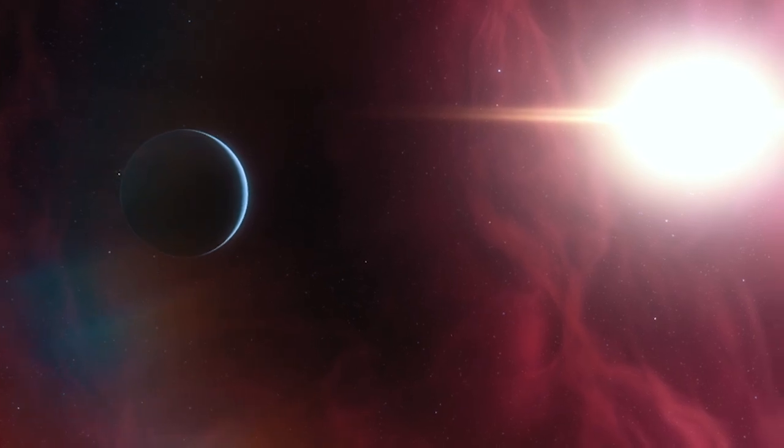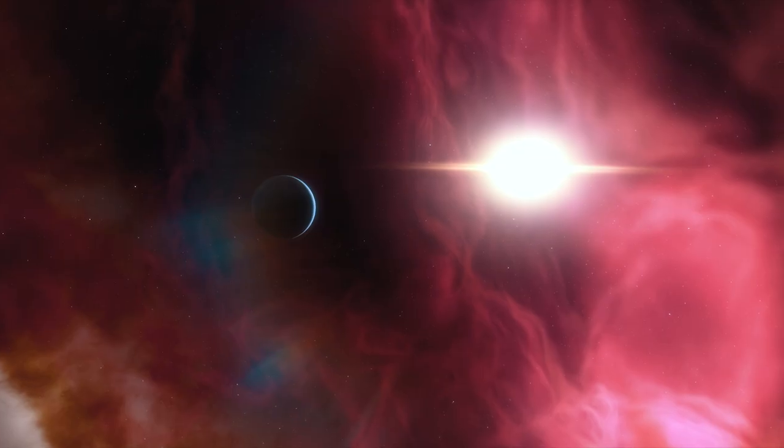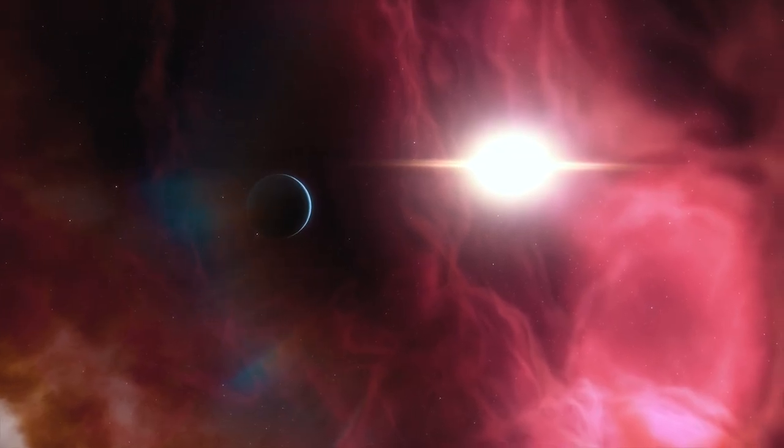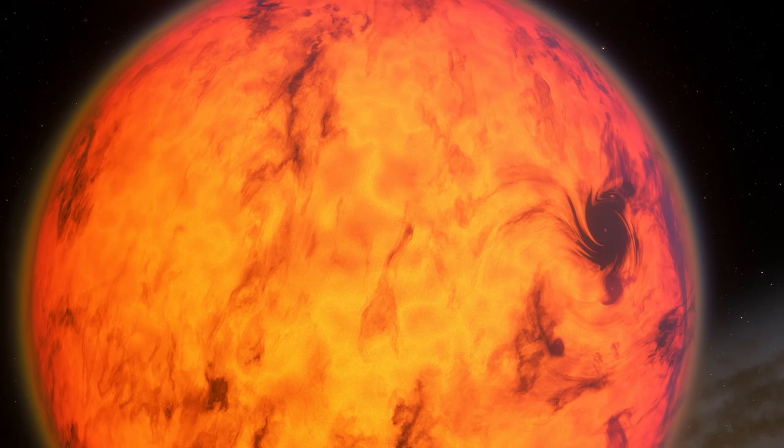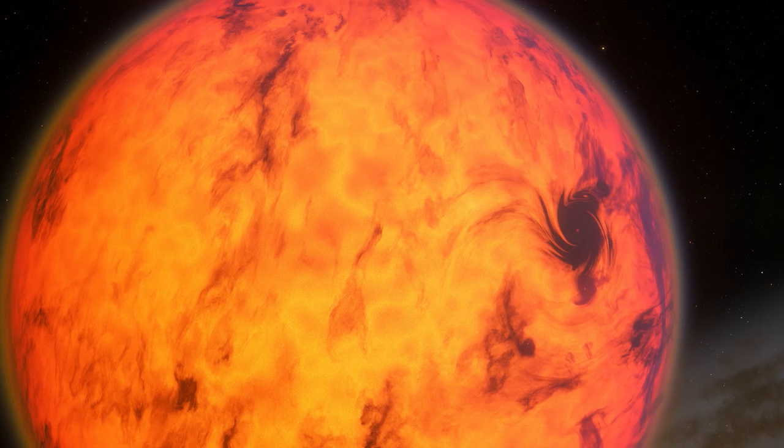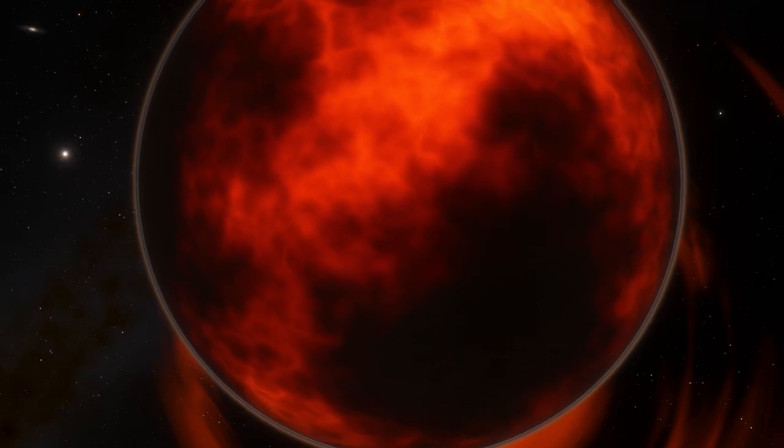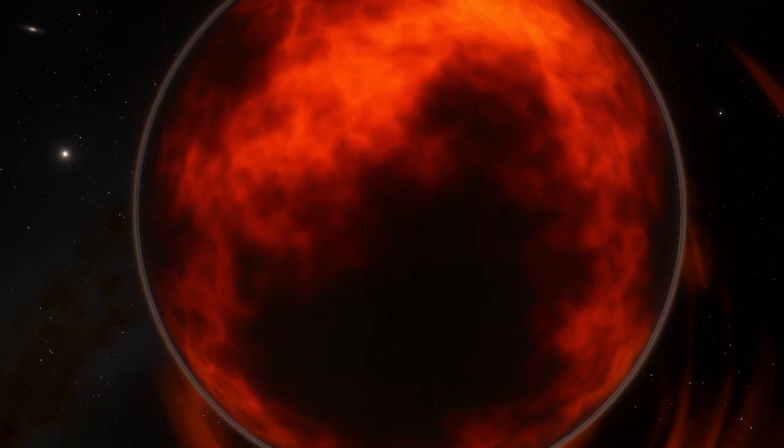Brown dwarfs are objects that form in the same way as stars, but they lack the mass needed to sustain nuclear fusion reactions in their cores. Without these reactions, they're unable to shine like stars, and they eventually cool down and become dim objects in space.